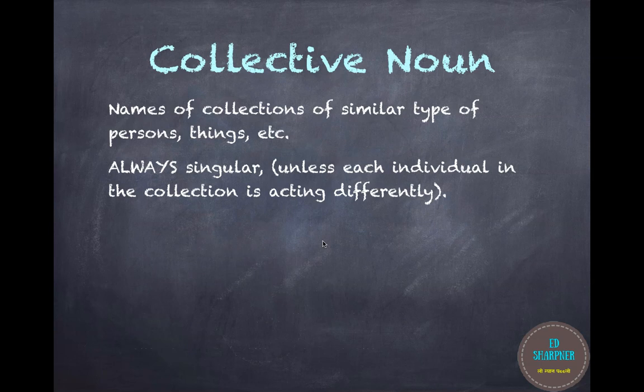Moving on, we have the next type — collective noun. These are the names of collections of similar types of persons or things. They are always singular unless each individual is acting differently. For example, a mob of angry people — it is a group of angry people but it is always written as singular.